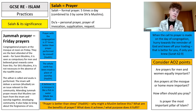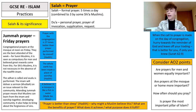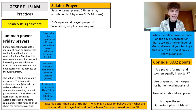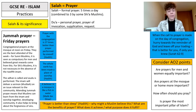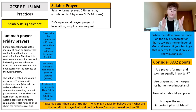Jummah prayer is Friday prayers — congregational prayers at the mosque at noon on Friday. For Sunni Muslims, it is seen as compulsory for men to attend at the mosque, and it is believed that great rewards will come from this. Women can also go and pray at the mosque but can also pray at home — if they do go, they will pray separately from the men. For Shia Muslims, it is not necessary to actually go to the mosque for Friday prayers in the absence of the 12th imam — a link to the ideas of the imam from the beliefs and teachings.